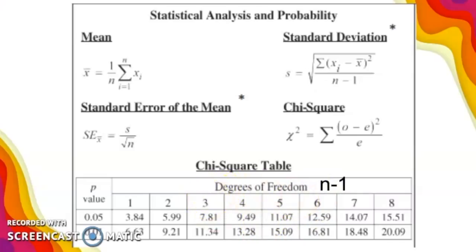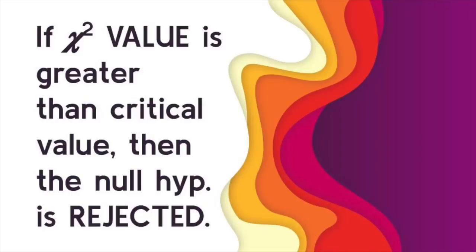If once you calculate your chi-square value, if your value is greater than the critical value, which is whatever shows up in this chart based on your degrees of freedom for a p-value of 0.05, then the null hypothesis is rejected, meaning our results are not due to chance. They are significantly different. Let's walk through what this looks like.